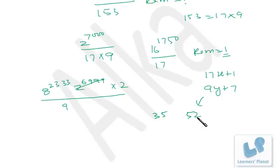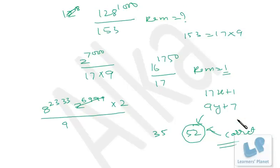Because 52 is 7 more than 45, and 45 is a multiple of 9, so 52 is the correct answer. That means if you divide 128 raised to 1000 by 153, your remainder will be 52. I hope you are clear, friend.